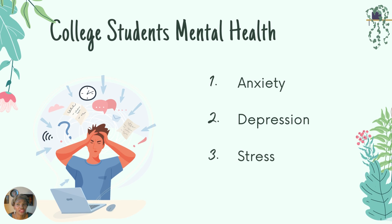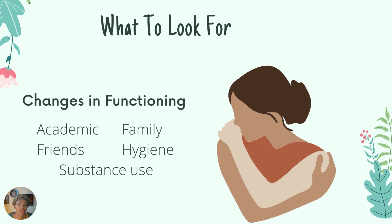The top three issues that students present within the Counseling Center are anxiety, depression, and stress. We're not going to be able to get into all the reasons why a person might contemplate suicide, but do understand that suicide is the second leading cause of death for those ages 15 through 24. There usually isn't one thing that makes someone think about suicide, so we look for changes in functioning when we assess for risk. Changes can be both good and bad — perspective really matters here.